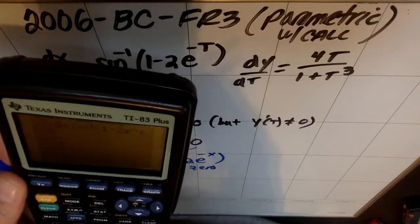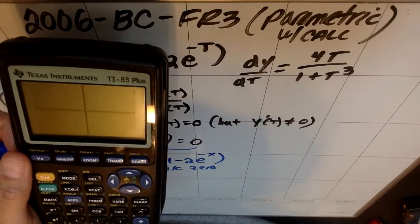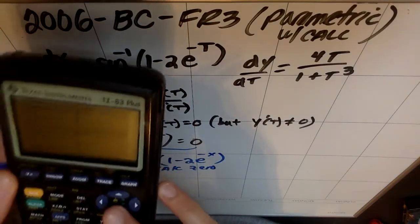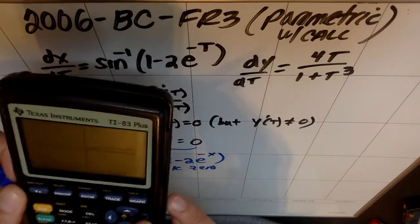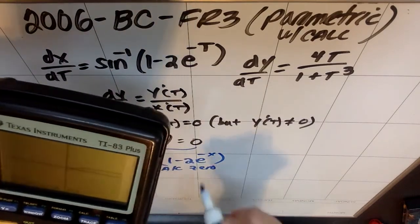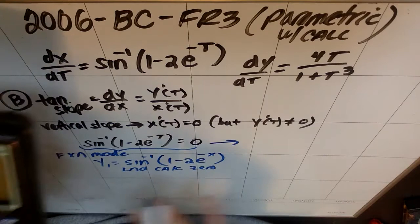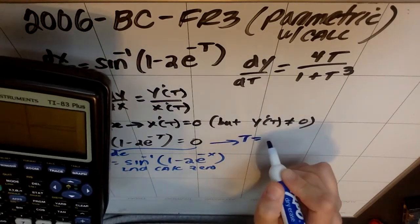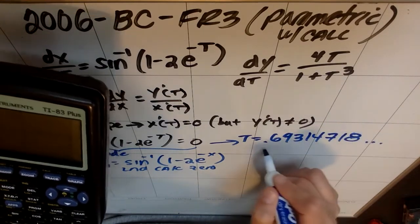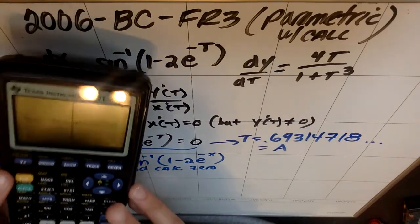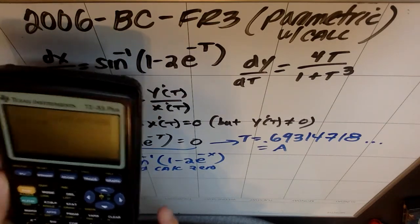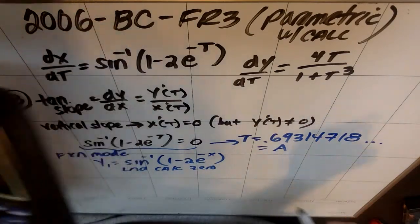So you'd switch to function mode, go to y equals, and you'd enter sine inverse 1 minus 2e to the negative x. And then you would go ahead and hit graph. And then you're going to second calc 0. So I'm left of the 0, I cross the 0, and I hit enter. And I get that my x, which is really a t, is 0.69314718.